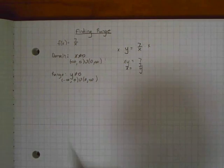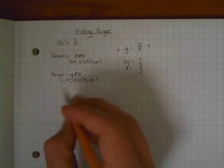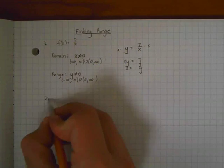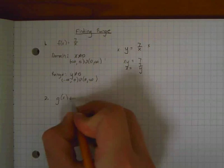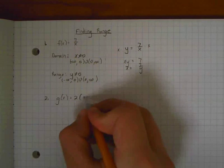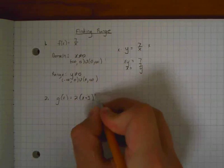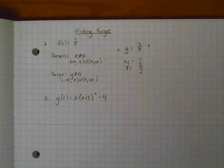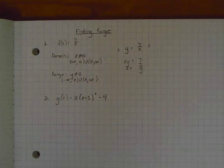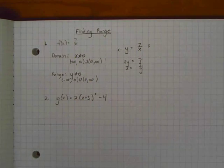Alright, so let's look at another function here and see if we can determine the range of this next function. We'll call the first one number 1 and the second one number 2. So our new function is going to be g of x equals 2 times (x plus 3) squared minus 4. Alright, so this is a quadratic function.